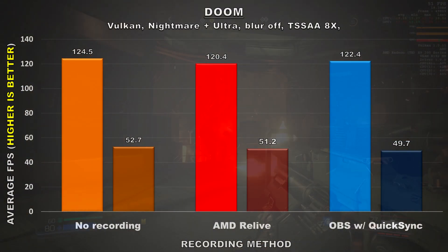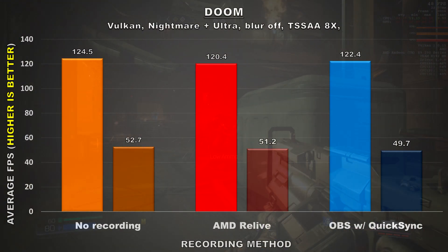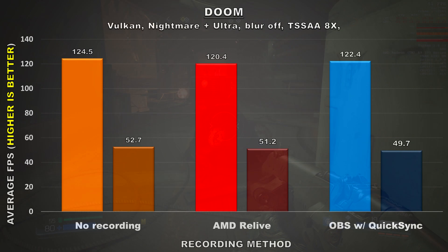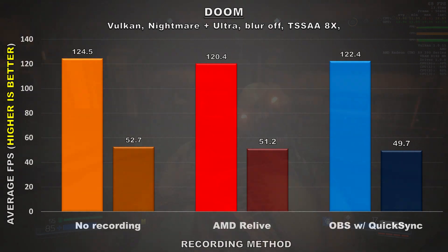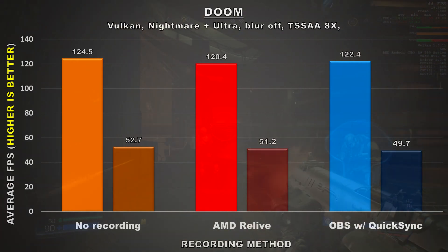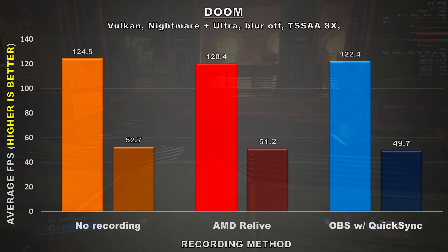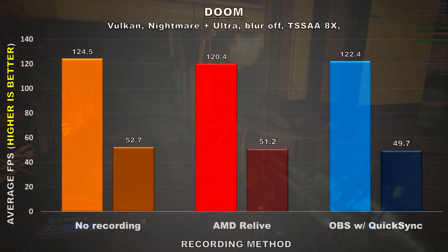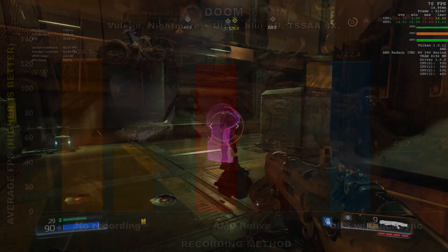Next let's look at Doom running on the Vulkan API. Recording with OBS resulted in better average frame rate performance here — OBS showed a difference of 2 FPS, whereas Relive had a difference of about 4 FPS. However, the opposite was observed for minimums, where Relive had only slightly over a 1 FPS difference and OBS had a 3 FPS difference compared to no recording. Regardless, either method should only have a very minimal performance loss, so you can choose whatever works best for you.